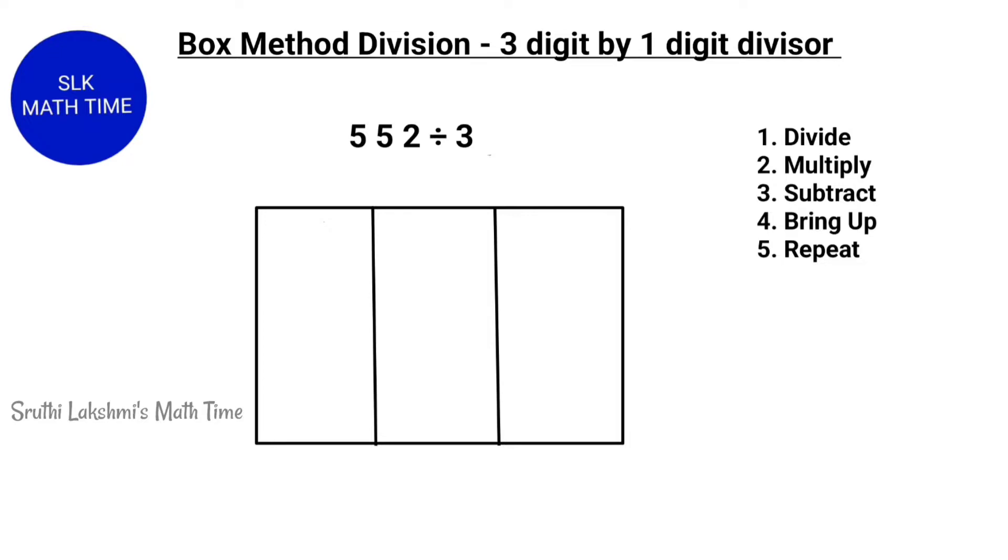Let's see the first example, which is 552 divided by 3. Here, 552 is our dividend and 3 is our divisor. Next, we draw a rectangle like this and split it into 3 sections. Why 3 sections? Because our dividend here has 3 digits.